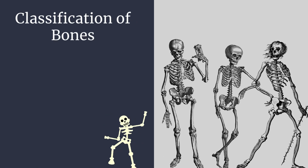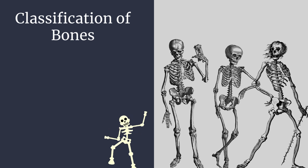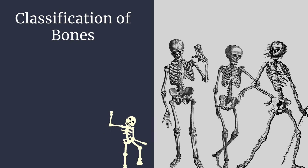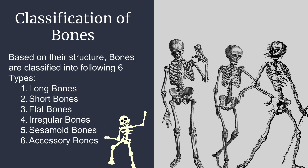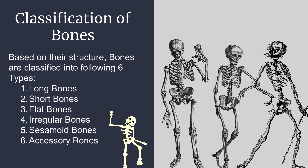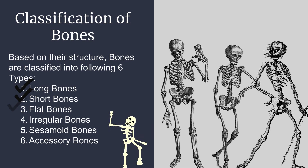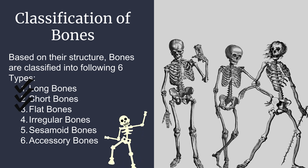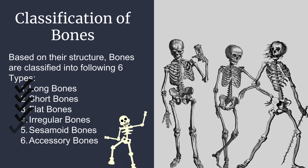In this video, we will talk about classification of bones. Based on their structure, bones are classified into the following six types: long bones, short bones, flat bones, irregular bones, sesamoid bones, and accessory bones.